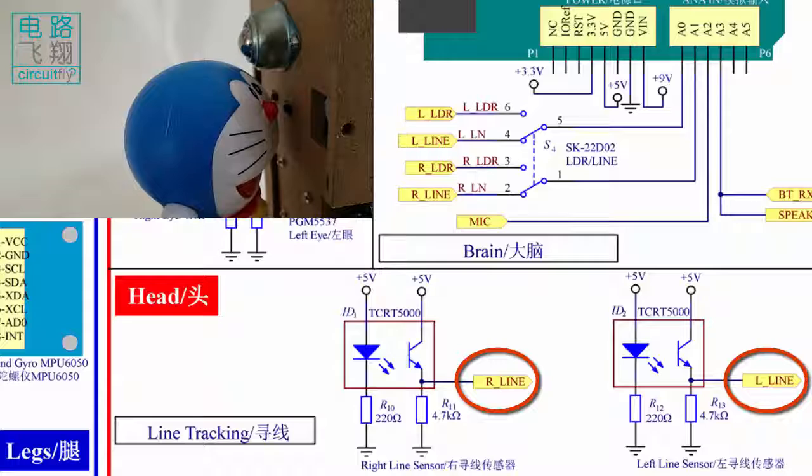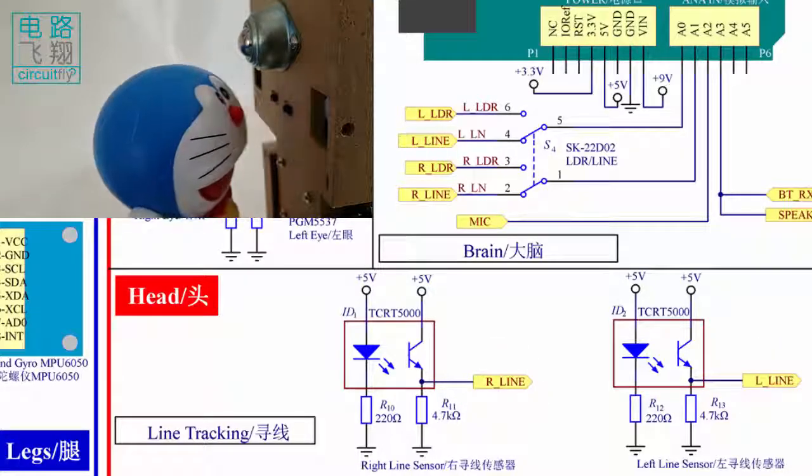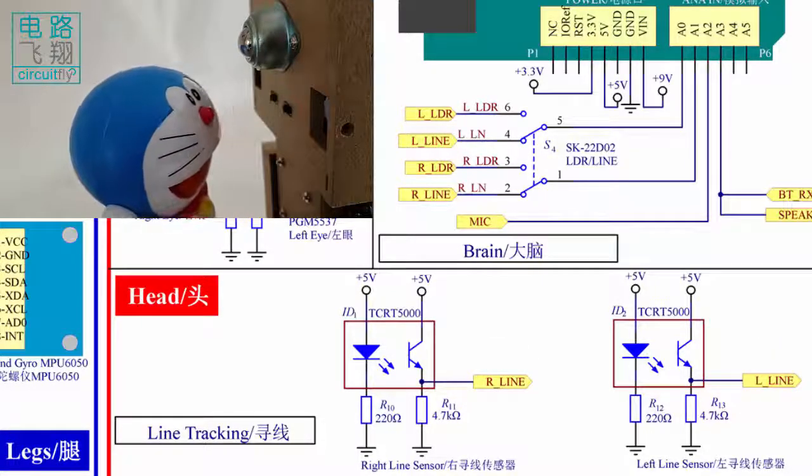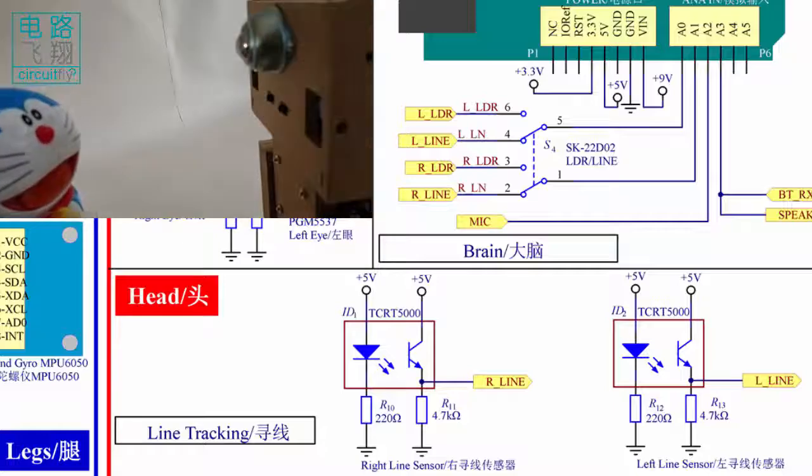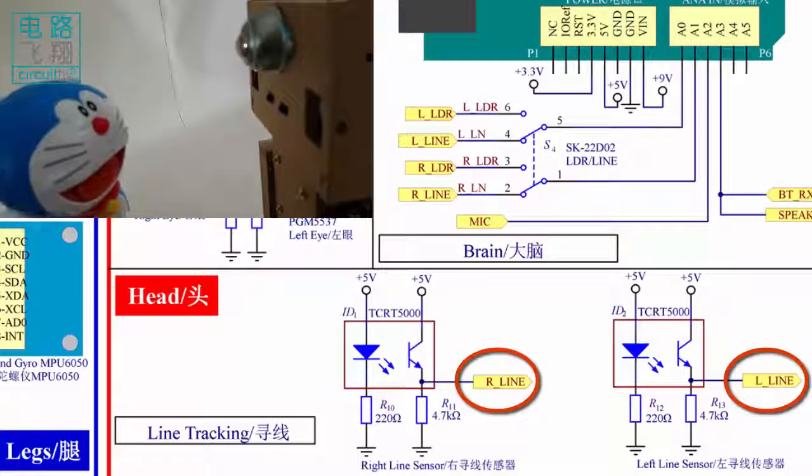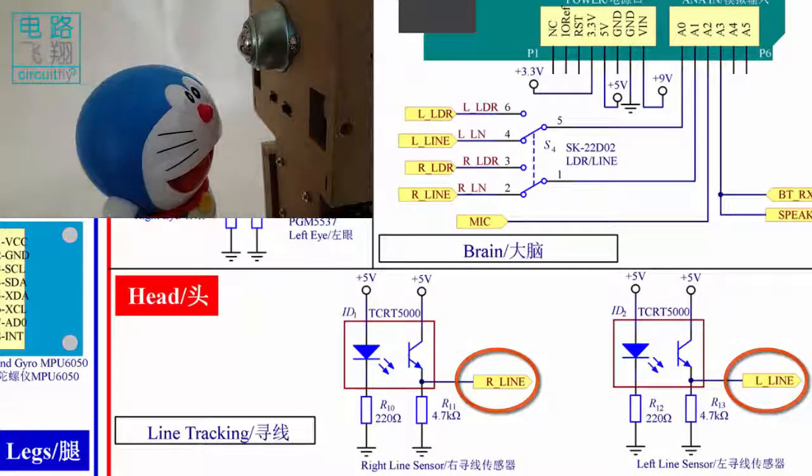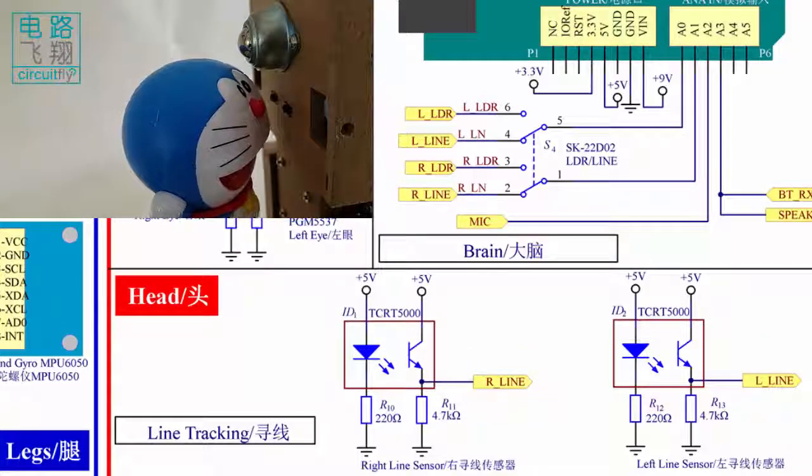Arduino的模拟信号输入端可以测量TCRT5000接收管的电压，从而判断是否有障碍物靠近。The analog input pins can read the voltage on the receiver in TCRT5000 and detect any approaching objects.